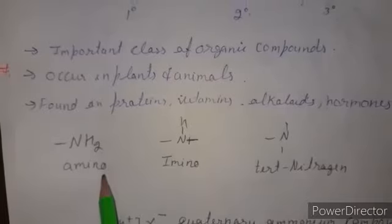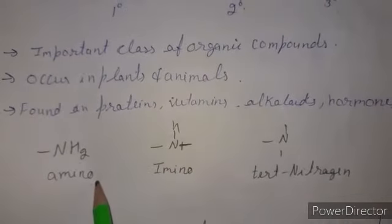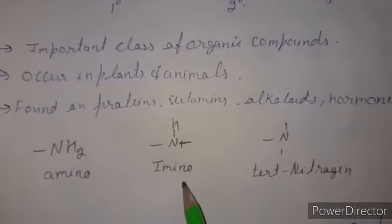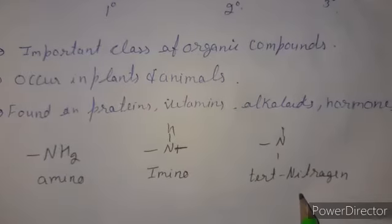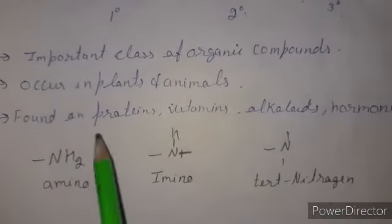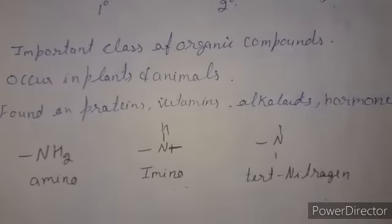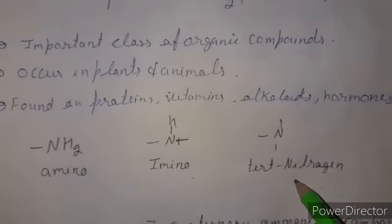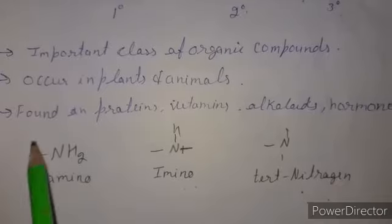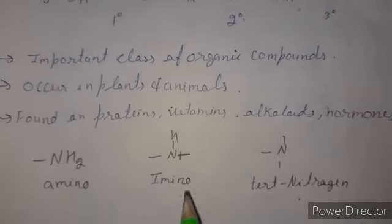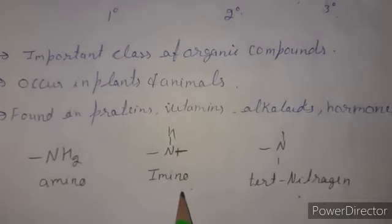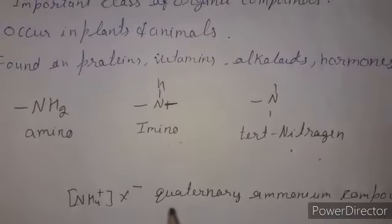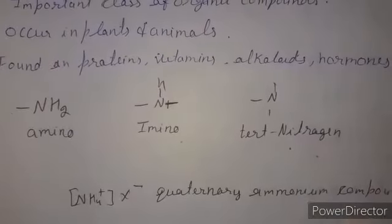If we replace one hydrogen from ammonia with an alkyl group, it is called a primary amine. If two hydrogens are replaced, it is called a secondary amine. If three hydrogens are replaced, it is called a tertiary amine. If all four bonds on nitrogen are occupied by alkyl groups with a positive charge and a halide, that is called a quaternary ammonium salt.